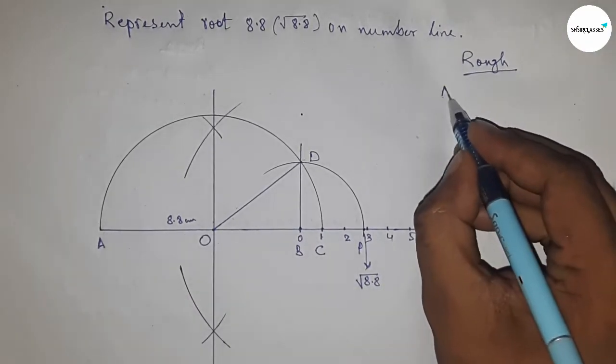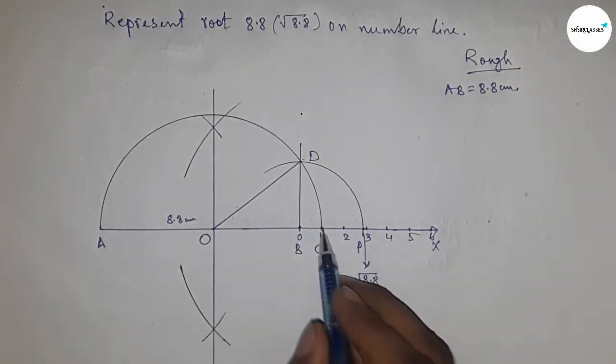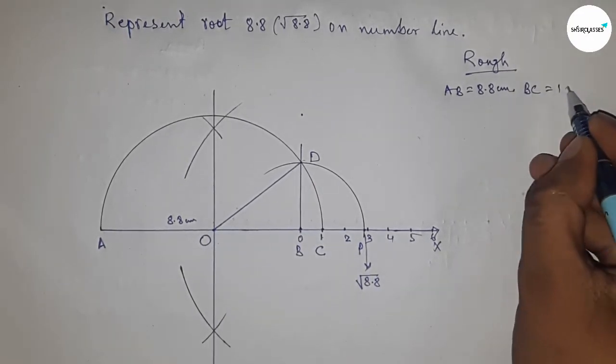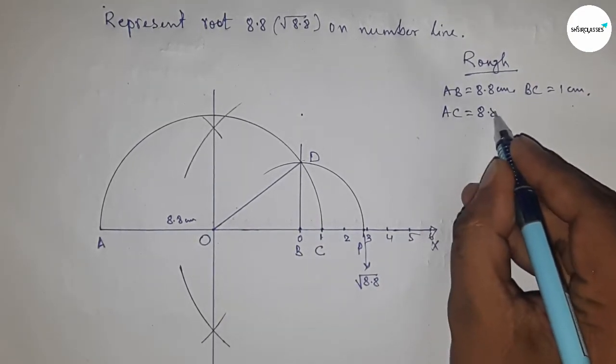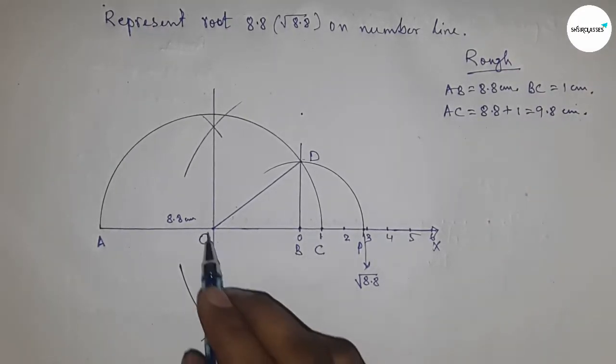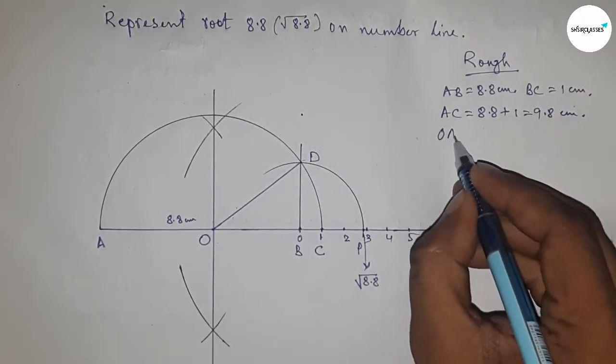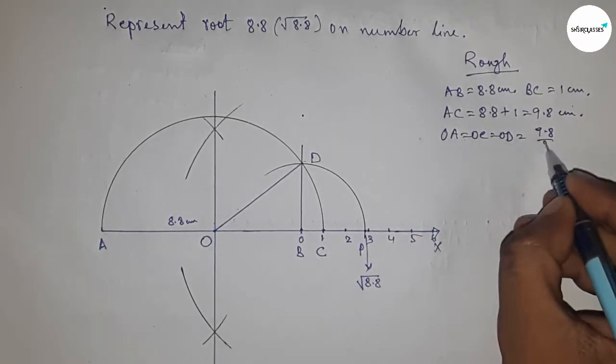Given: AB = 8.8 cm and BC = 1 cm. So we can write AC = 8.8 + 1 = 9.8 cm. The radius OA, OC, and OD equals 9.8/2 = 4.9 cm.